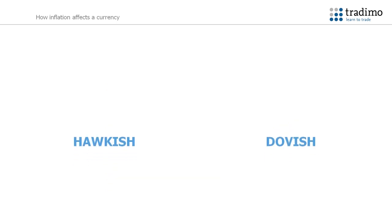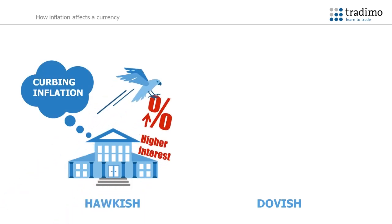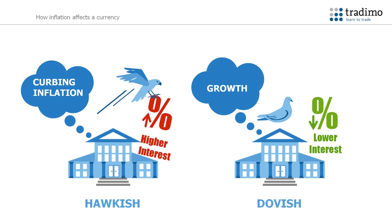The terms hawkish and dovish refer to how a central bank will manage the balance between inflation and growth. If a central bank is concerned about inflation, it is considered hawkish, and is more likely to adopt a higher interest rate. If a central bank is concerned about growth, it is considered dovish, and is more likely to adopt a lower interest rate.